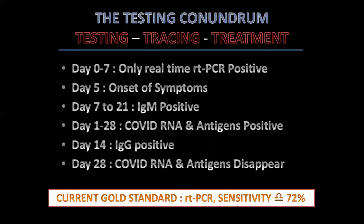The current gold standard is RT-PCR — real-time reverse transcriptase polymerase chain reaction — which tests the nucleic acid of the RNA of the virus. But even with RT-PCR, sensitivity is at best 70%. It is least with an oropharyngeal swab, slightly higher with a nasal swab, and approaches 90% when the swab is taken from an endotracheal tube in an ICU patient.